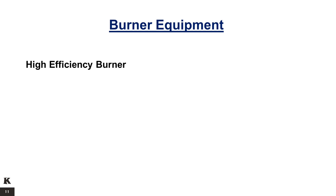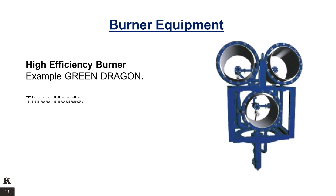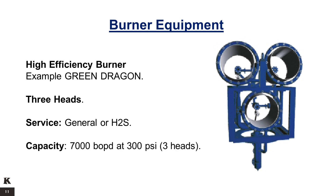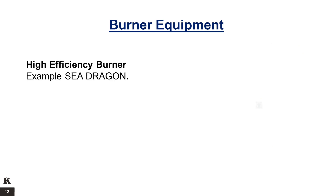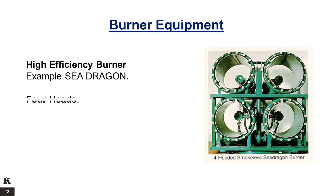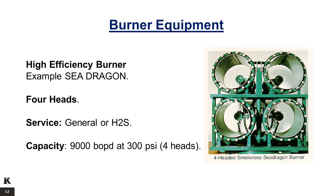High-Efficiency Burner. Example: the Green Dragon. It is a three-headed burner used for general or H2S service. Its maximum capacity is 7,000 barrels of oil per day at 300 PSI with three heads used. The Sea Dragon is a four-headed burner also used for general or H2S service, with a maximum capacity of 5,000 barrels of oil per day at 300 PSI with four heads used.